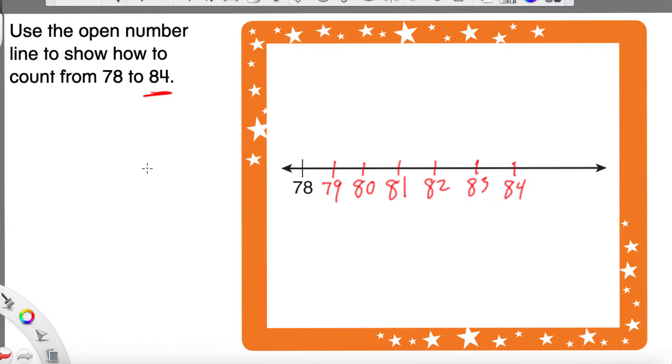Now let's find out how many jumps it takes to go from 78 to 84. I'm going to make a dot on 78. Ready? And 1, 2, 3, 4, 5, 6. And we end on 84, it took 6 jumps.